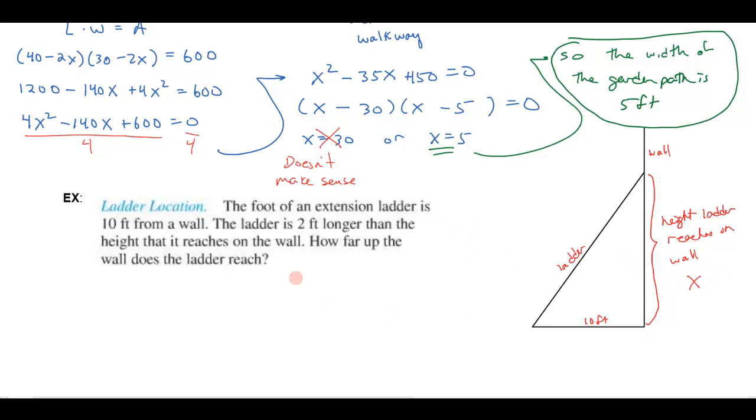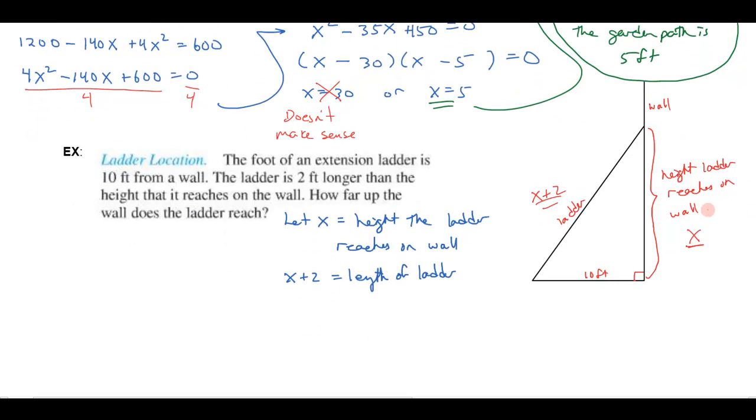And then it says the ladder is 2 feet longer than that. So, let's call this x. Let's label our variable. Let x be the height that the ladder reaches on the wall. And then it tells me the ladder is 2 feet longer than that. So x plus 2 is the length of the ladder. So the ladder here is going to be x plus 2. And I got the wall over here is x. And this is 10. Well, this is a right triangle right here. And I say, oh, I could use the Pythagorean Theorem to solve that. I know that in any right triangle, the sum of the squares of the two short sides is going to be the square of the hypotenuse.